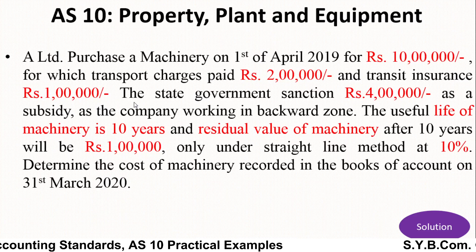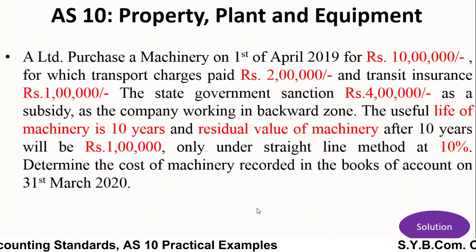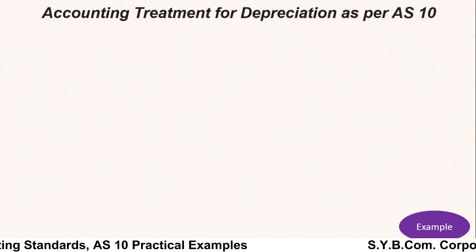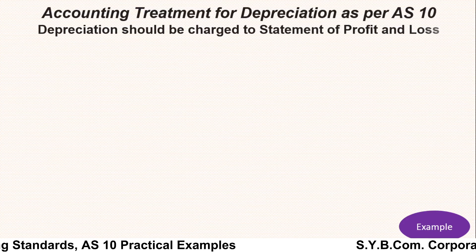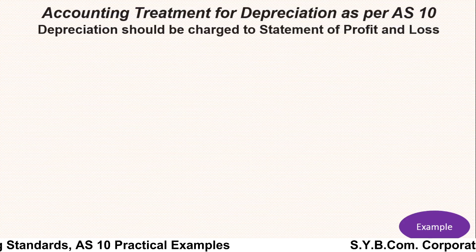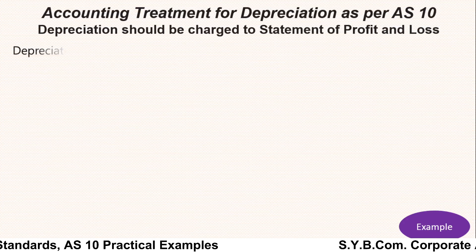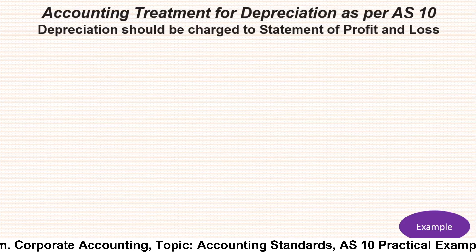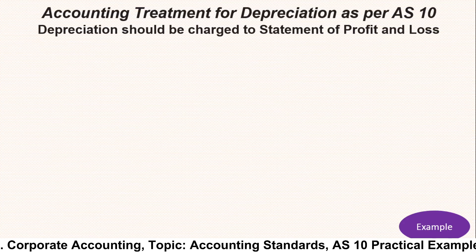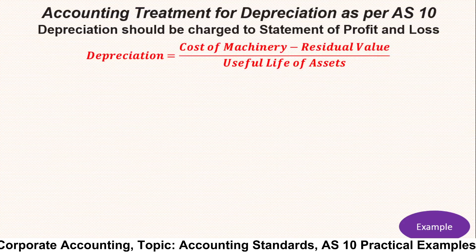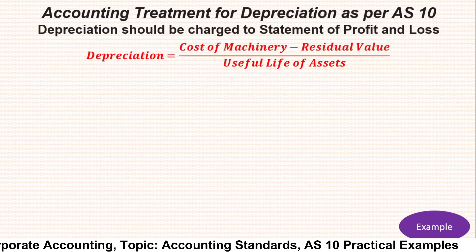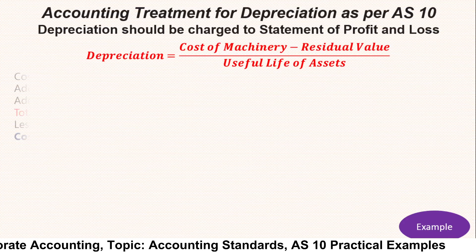As per Accounting Standard 10, depreciation should be charged to the Profit and Loss account. The formula for depreciation is: Depreciation = (Cost of Machinery − Residual Value) ÷ Useful Life of Asset.